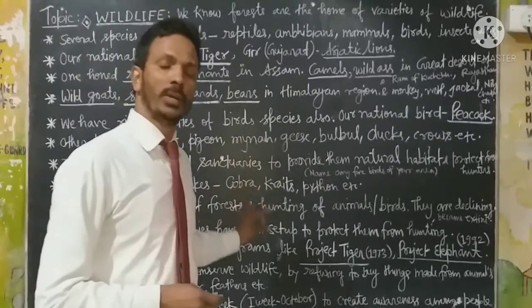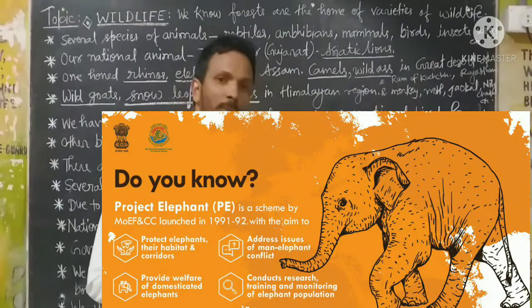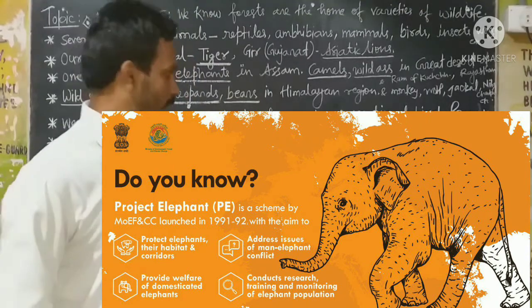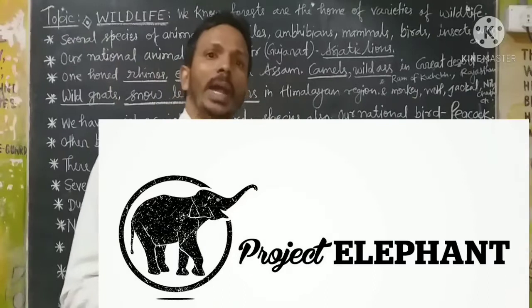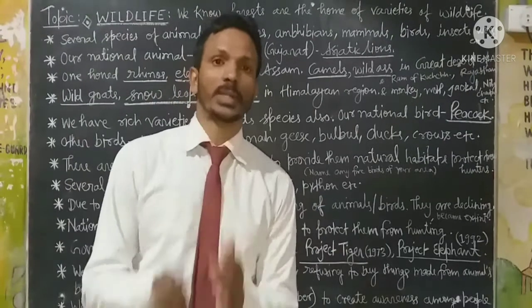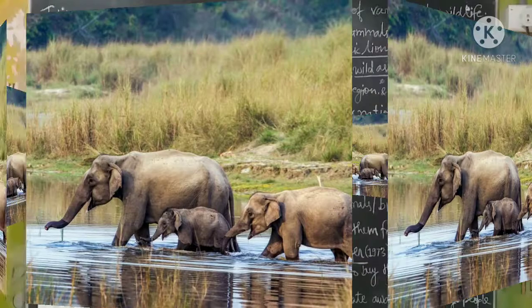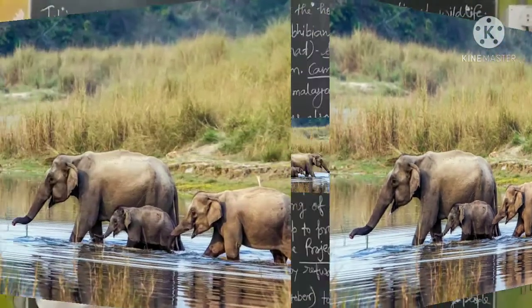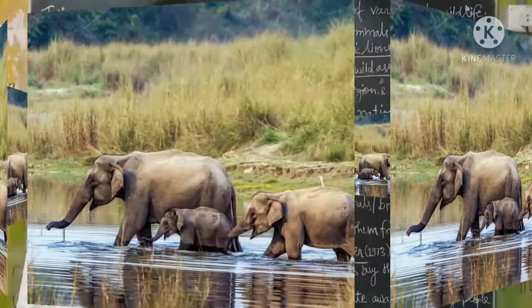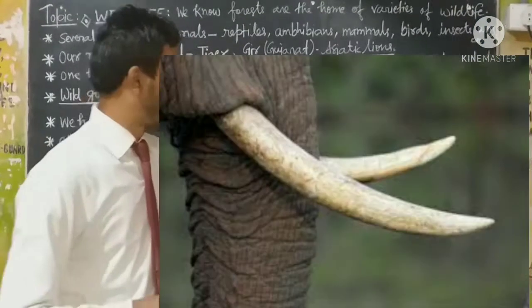Another project was started in 1992 — that was Project Elephant. Project Elephant was also started for a similar reason as Project Tiger. When Project Elephant started in 1992, we had only 15,000 elephants, and they were being killed illegally for their tusks. So, Project Elephant was started.